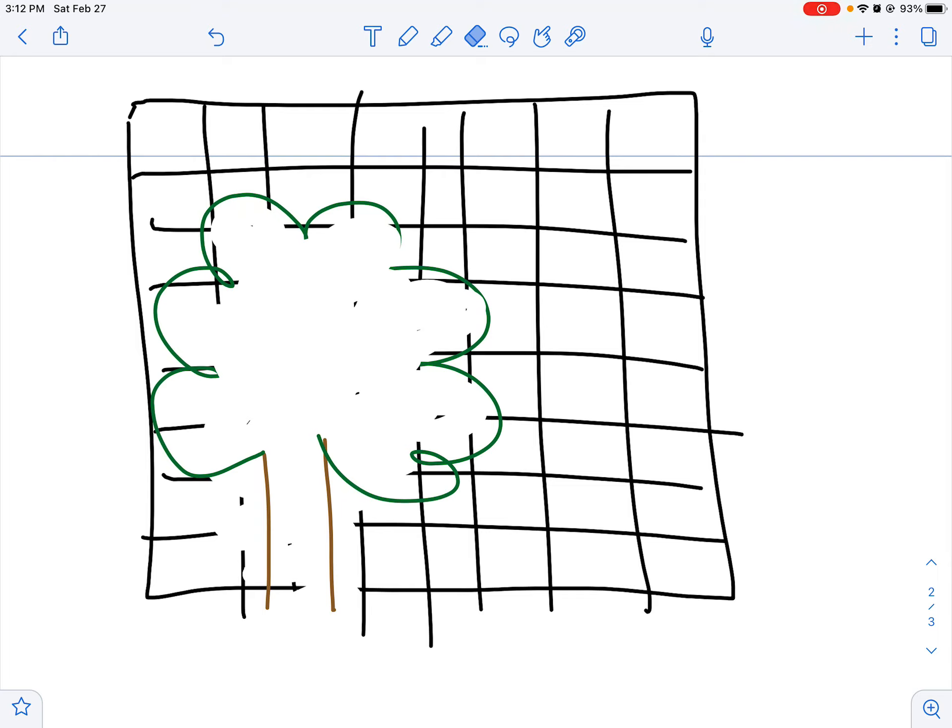So now you know all you have to do is count the side length—how many tiles on this side—count the side length, how many tiles on this side, and then you're going to multiply those side lengths to find the area of the whole window pane, even though some of it's covered up by that view of the tree.